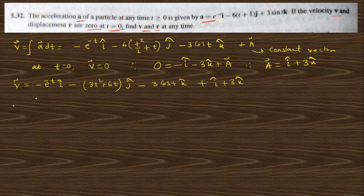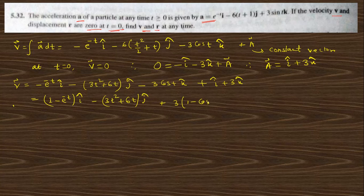So the v vector, combining with the constant vector, becomes: (1 − e^(−t)) i-cap, plus (3t² + 6t) j-cap, plus 3(1 − cos t) k-cap. This is the velocity at time t.